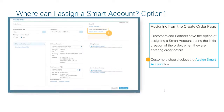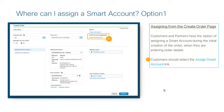Option 1 is on the initial order page, where you can assign at the header level, meaning all licenses in your order will be assigned to the same customer smart account. Navigate to the top right of the page and click Assign Smart Account.